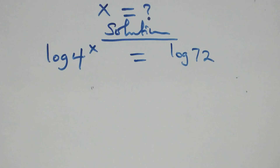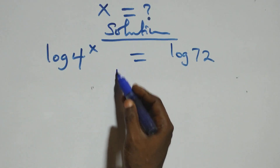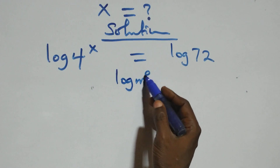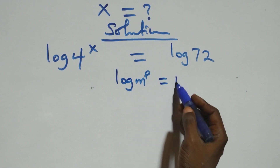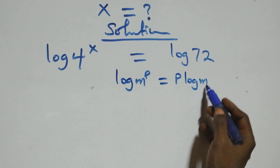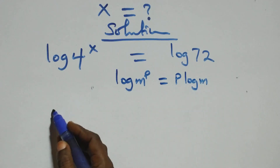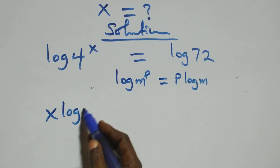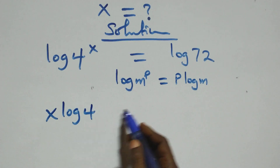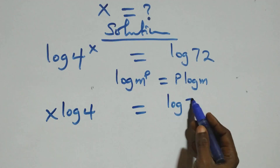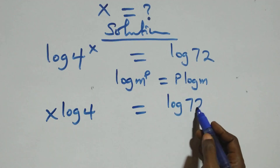Here we apply the power rule of logarithm. When we have log m raised to power p, it's the same thing as p log m. What we have here becomes x log 4 equals to log 72 on this side.